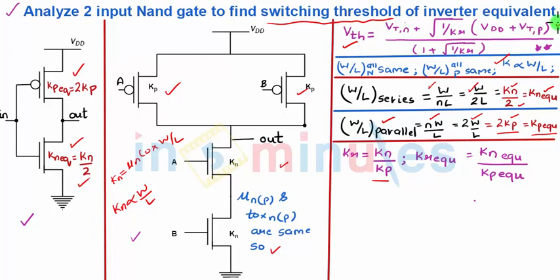At that point of time my Kr was equal to Kn by Kp but here we have reduced our two input NAND gate to a CMOS inverter equivalent and that circuit does not no longer have Kn and Kp but it has Kn equivalent and Kp equivalent so we have got Kr equivalent which is Kn equivalent upon Kp equivalent.